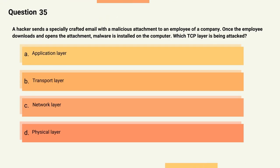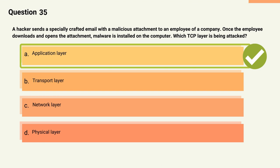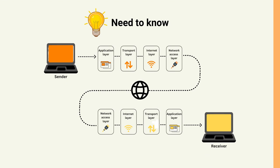Question 35: A hacker sends a specially crafted email with a malicious attachment to an employee of a company. Once the employee downloads and opens the attachment, malware is installed on the computer. Which TCP/IP layer is being attacked? The correct answer is the Application layer. Explanation: The application layer is responsible for providing applications with access to the network. In this scenario, the hacker is using an email as an attack vector.